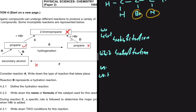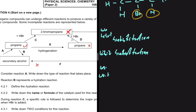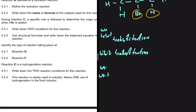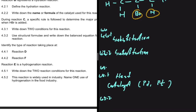For 4.5, reaction E is a hydrogenation reaction. We start with propene and end up with propane. The question asks for two reaction conditions for hydrogenation: we need heat and we need a catalyst — in this case palladium, platinum, or nickel.